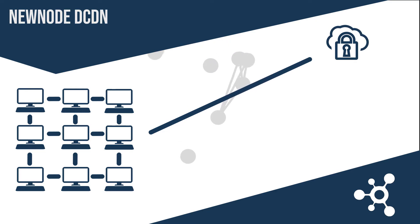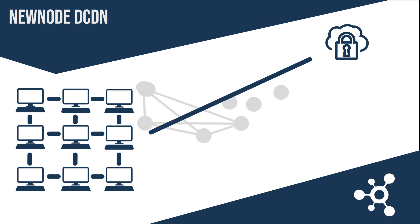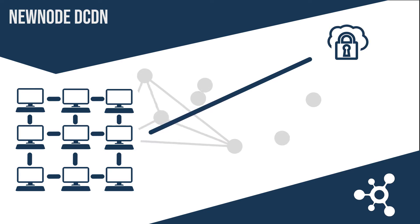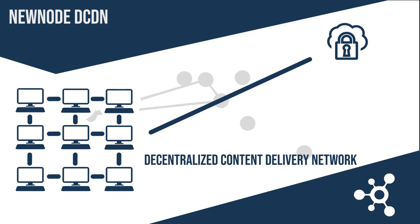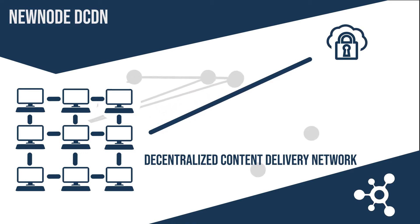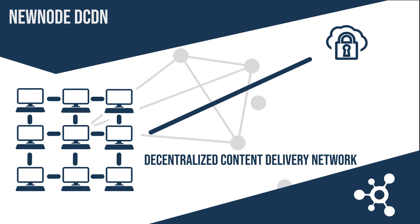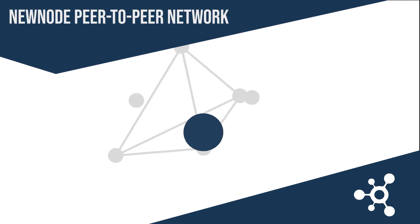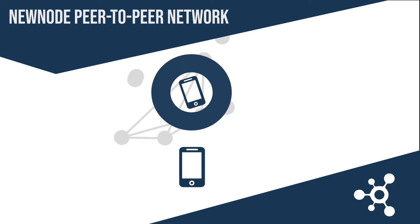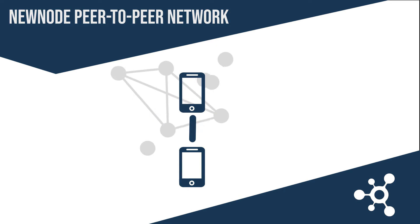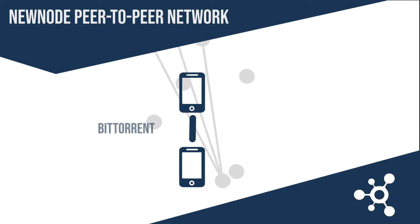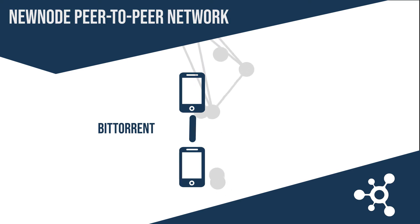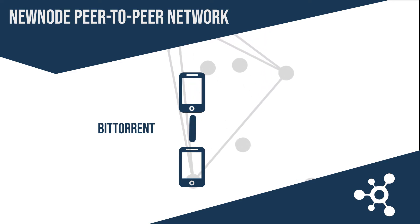It's important to underline that in the video game example, this method has the advantage of using an existing network that is large and well distributed — the network consisting of the million connected game devices. By enabling each user device to act as a content server, NewNode avoids the need to create and maintain an expensive new CDN just to serve content for one game. In NewNode, the nodes comprising the decentralized network are mobile devices connected to each other by means of dynamic addresses located within the already robust BitTorrent network. Because BitTorrent exists around the world, the NewNode nodes can translate their accessibility in a reliable way while identifying themselves securely within the network and connecting to each other.